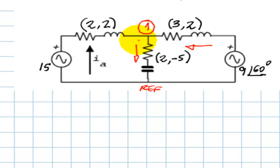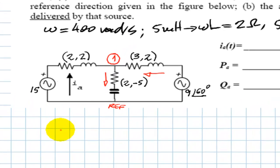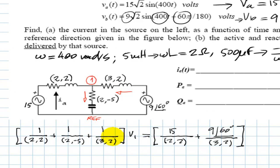We write one KCL equation and solve for V1. We're going to use the KCL equation by inspection. The coefficient is the sum of all the admittances connected to node 1: inverse of (2+j2), inverse of (2-j5), and inverse of (3+j2). The right-hand side term is the sum of all current sources feeding node 1, which if we convert the Thevenin branches to Norton, is 15 over (2+j2) and 9∠60° over (3+j2).